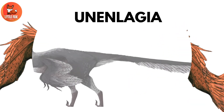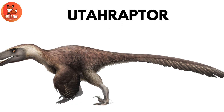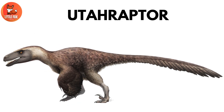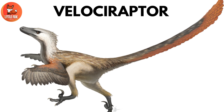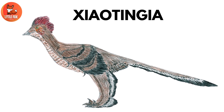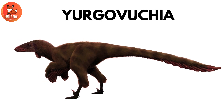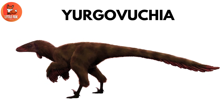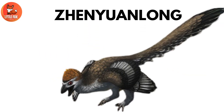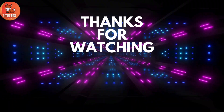Number 36: Tsai-Gan. Number 37: Unan-Lagia. Number 38: Yuta-Raptor. Number 39: Velociraptor. Number 40: Tsai-Gan. Number 41: Yurgo-Vuchiya. Number 42: Jinai-Yuan-Lang. Thanks for watching.